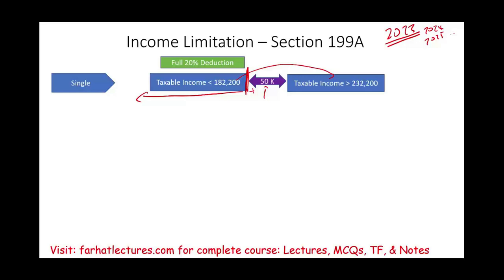Once you exceed $232,200, we treat your business as either an SSB or a non-SSB business. If it is an SSB business, you're done — you lose your deduction entirely. So if you are above $232,200 and in an SSB business, you get nothing. If you're a non-SSB business, we have to work through some limitations, which we'll cover shortly.